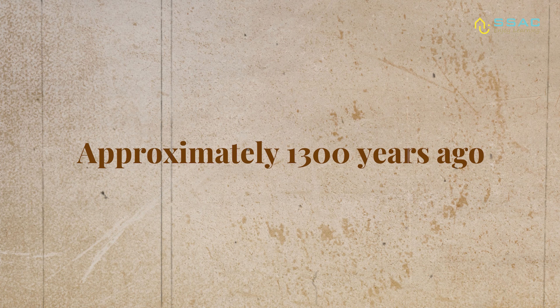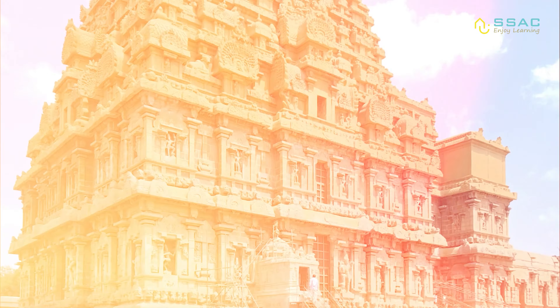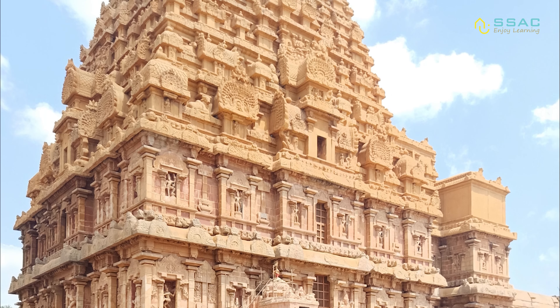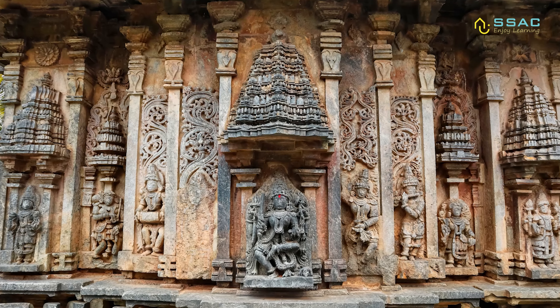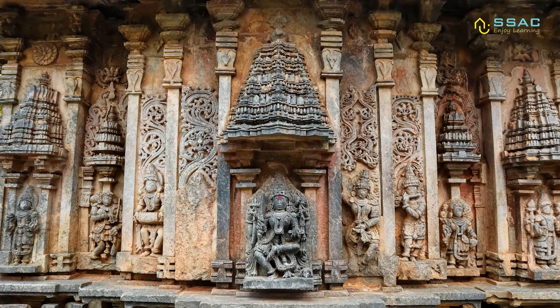The Pallava dynasty laid the foundation for Dravidian temple design, introducing rock-cut shrines and early structural temples. This was followed by the Chola period, which refined and expanded the style, adding grand multi-tiered Vimanas and emphasising intricate stone carvings.